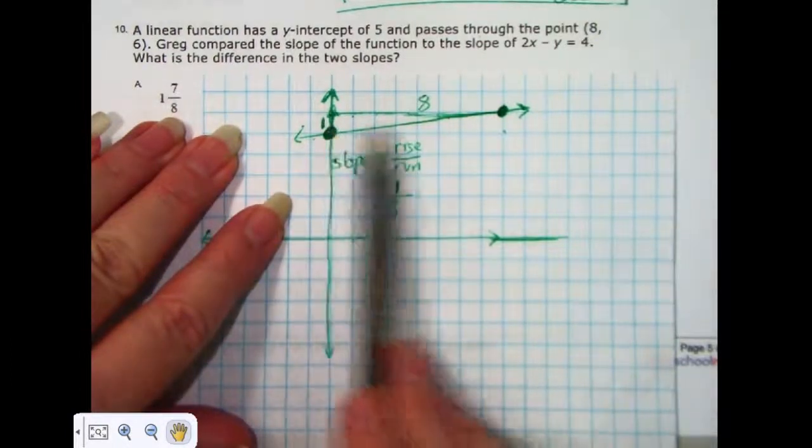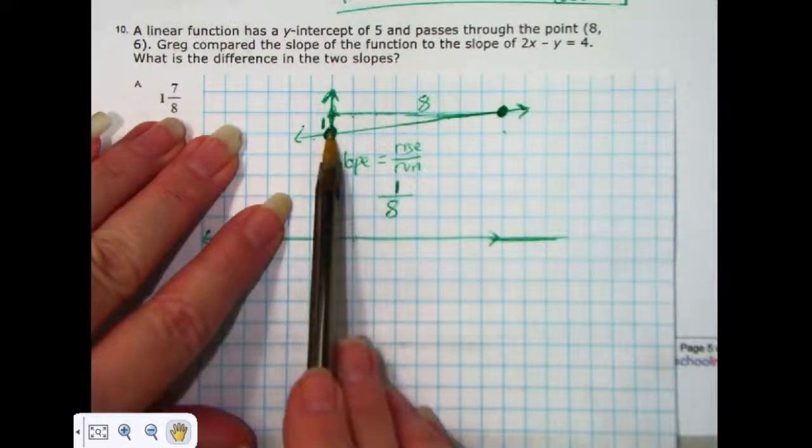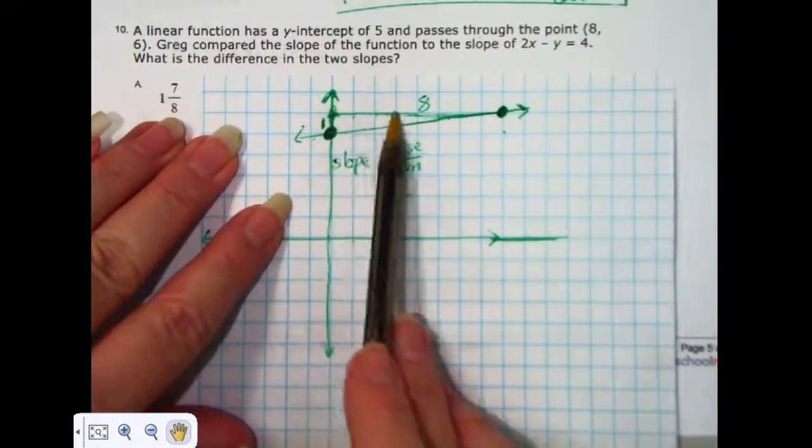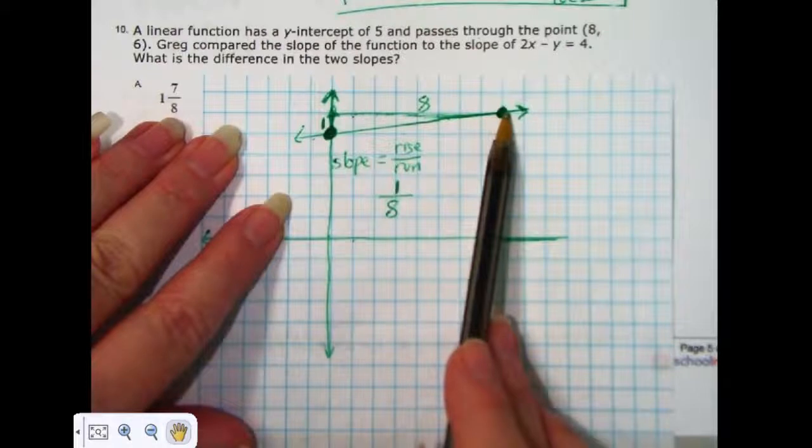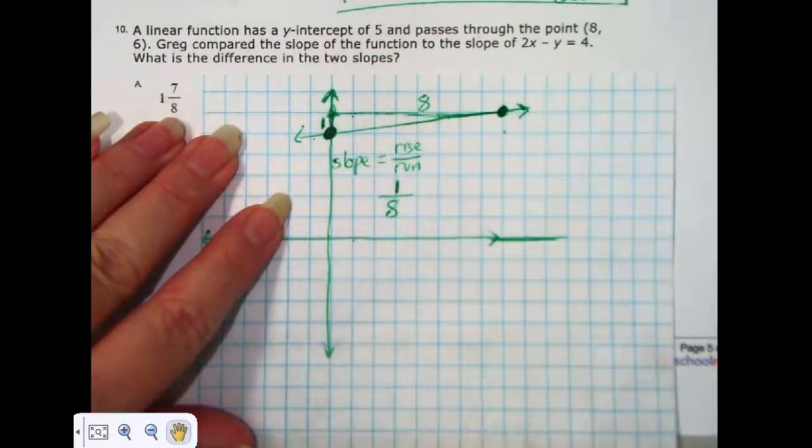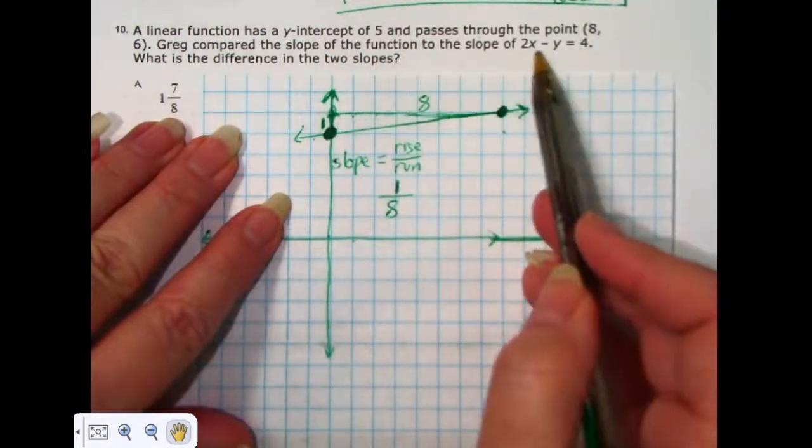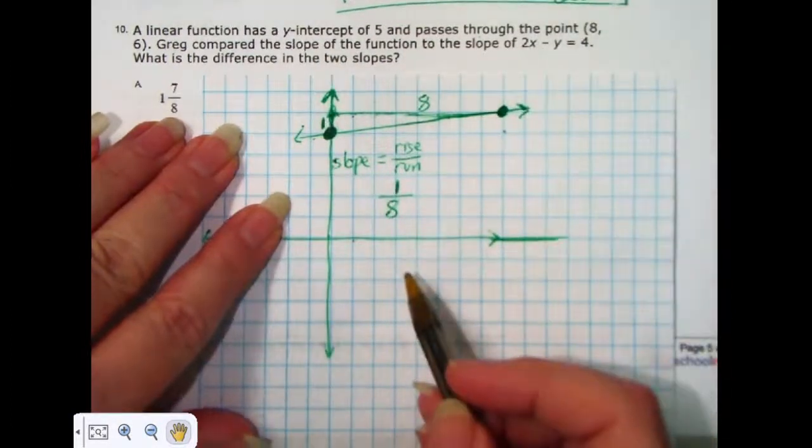So, again, we get the slope being 1/8 by counting up 1 and count over 8 to get to the other point that is on the line. So, that gives us the slope of the first part, but it doesn't give us the slope of the function 2x minus y equals 4.